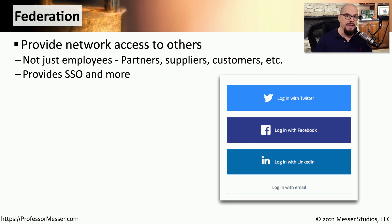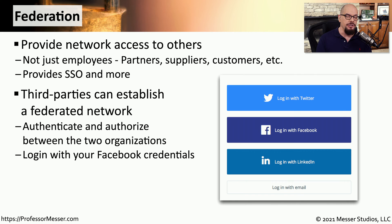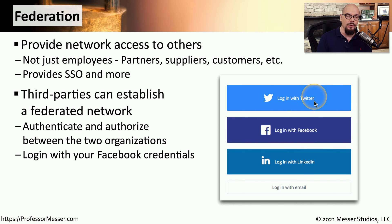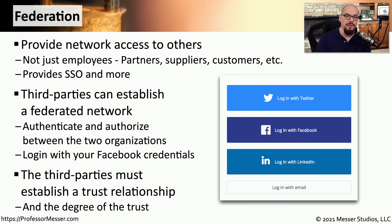Instead of maintaining your own database of usernames and passwords, you can use authentication information that's already contained at a different site. This is called federation, and it's a way that you can allow someone to authenticate to your network using credentials that are stored with a third party. To enable this federation, you would need to coordinate the authentication and authorization process between your organization and the third party that's providing these credentials. But once that process is complete, someone can log in with that third party username and password. So you can present a login page that will allow someone to log in with their Twitter account, their Facebook account, their LinkedIn account, or others. Once that trust relationship is in place, your users can simply choose the authentication type that works best for them and use those credentials to gain access to your network.